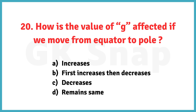How is the value of G affected if we move from equator to pole? The correct answer is option A: it increases.